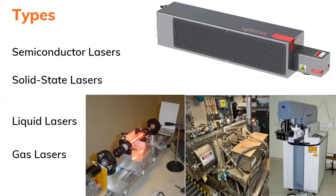Semiconductor lasers can be found in several different types of electronic devices. They can be used in devices like printers or scanners. These are the diode type of lasers — semiconductor diode lasers.